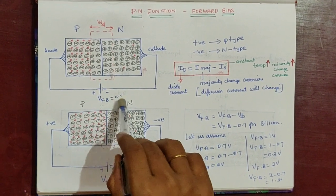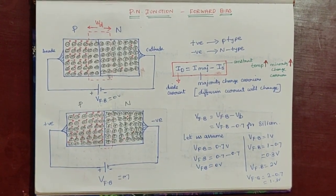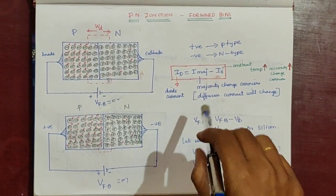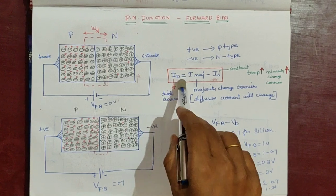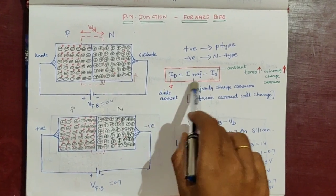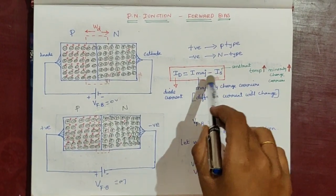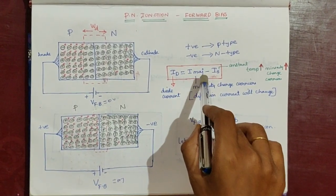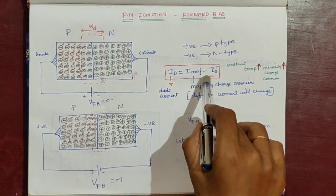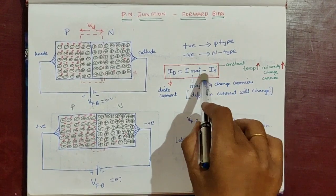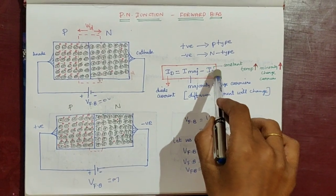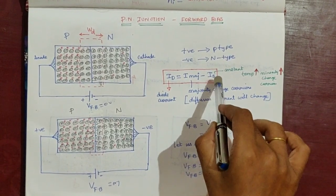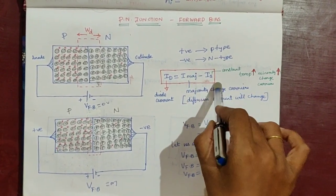At 0V forward bias, the net diode current ID is given by the diode current equation: ID equals I_majority minus I_S. I_majority is the diffusion current due to majority charge carriers flow. I_S is the saturation current, also called minority charge carriers flow or drift current.